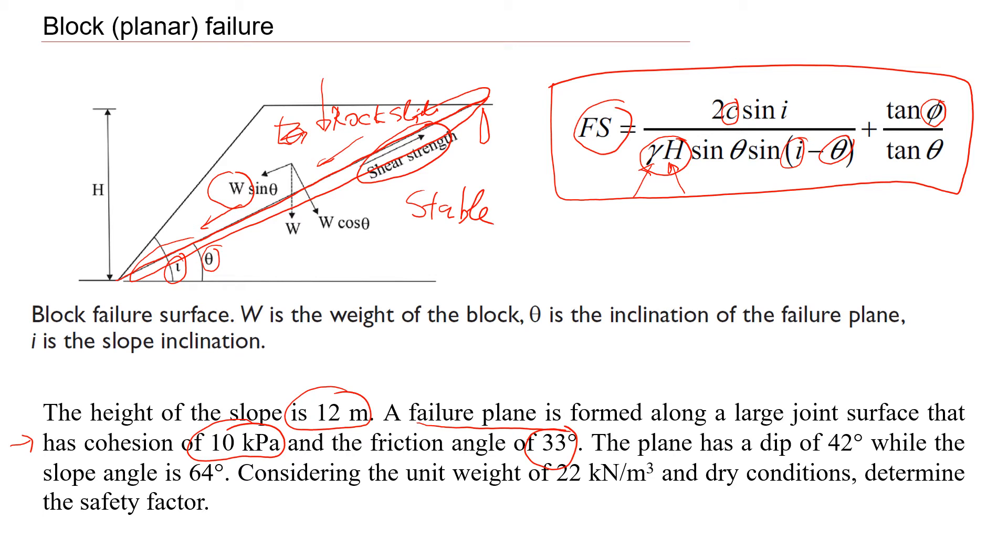We can measure the plane inclination. In this case, it's a dip, which is 42 degrees. This will be 42 degrees, theta. And then we can also measure the inclination of the slope face. It is 65 degrees. This angle i will be 64. It should be steeper. We're also given some data on the unit weight, dry conditions. Probably there is no water. We need to determine the safety factor.